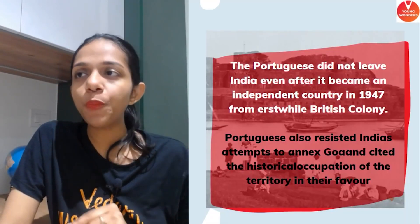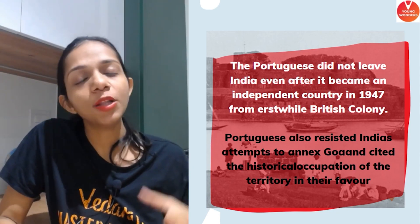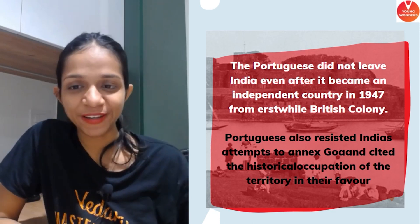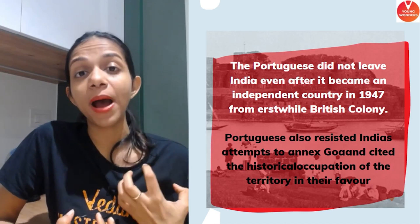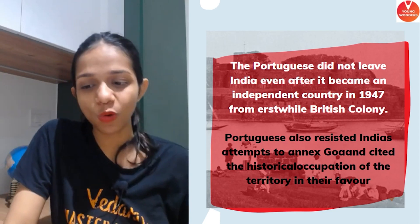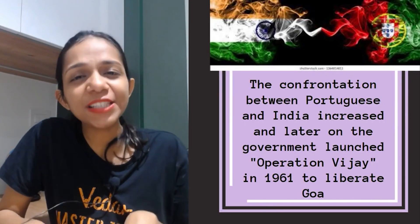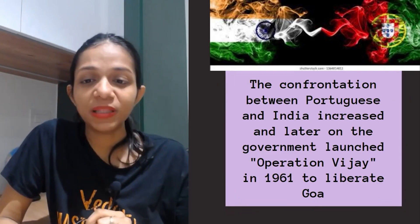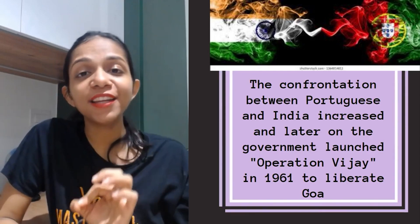Now let's understand what happened when India got independence in 1947 — what was the position of Goa? We thought that like the British and other European powers who left India, the Portuguese would also leave. But aisa nahi hua. They did not leave even after India became independent, because Portuguese ka claim tha ki when we occupied Goa there was nothing like India, and that is why Goa is a part of Portugal. The confrontation between Portuguese and India eventually started increasing, eventually pushing the Indian government to launch Operation Vijay in 1961 that finally liberated Goa.